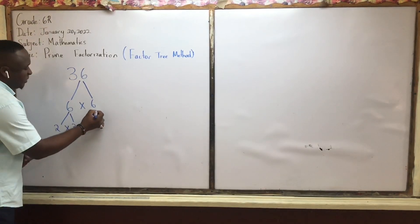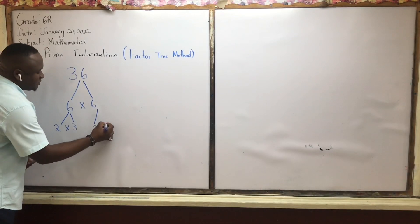Right? And it's the same 6 on this side. So we multiply again. What again for 6? 2 times 3.